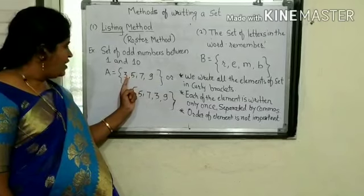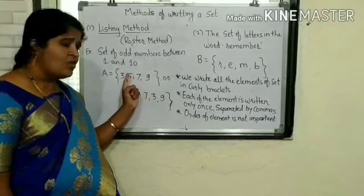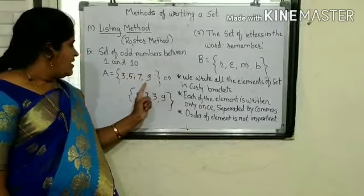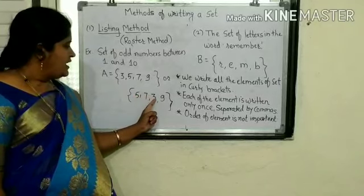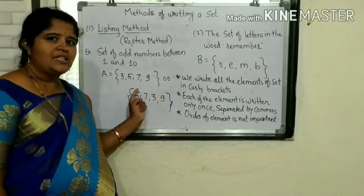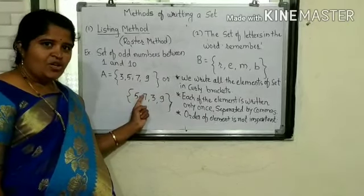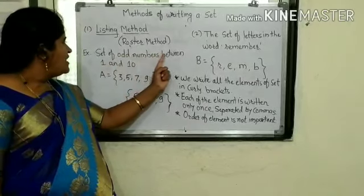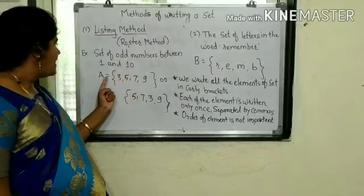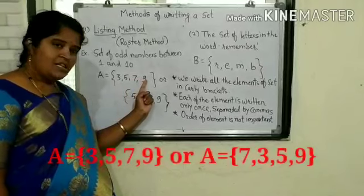See here, each element of the set is separated by commas, and no element is repeated. Or we could write 5, 7, 3 and 9 — here the order of elements is changed, but both the sets are the same. So, the set of odd numbers between 1 and 10 can be written as: A = {3, 5, 7, 9}.